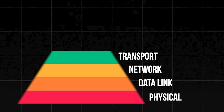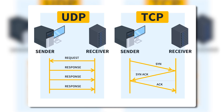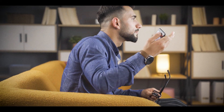The transport layer is all about delivery. It decides how data gets sent — reliably with TCP, like a tracked package, or quickly with UDP, like live streaming where speed trumps perfection. It breaks data into chunks, ensures it arrives in order, and retransmits anything lost. Without this layer, your Netflix binge would be a mess of jumbled frames.